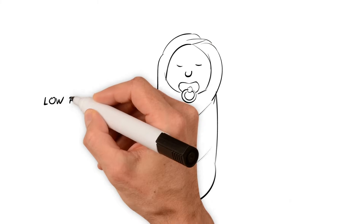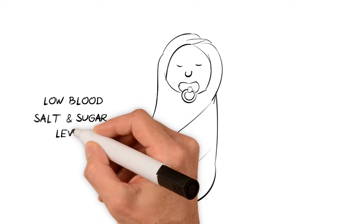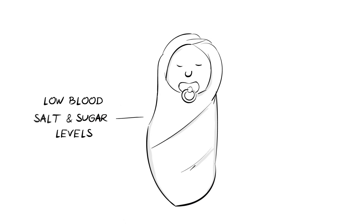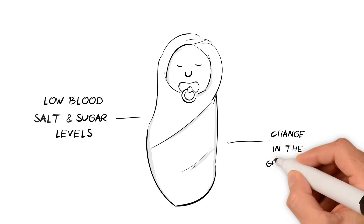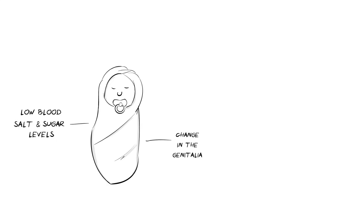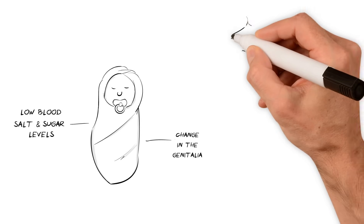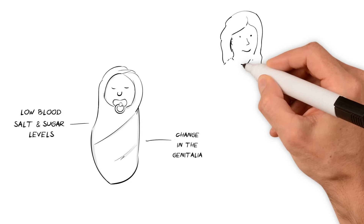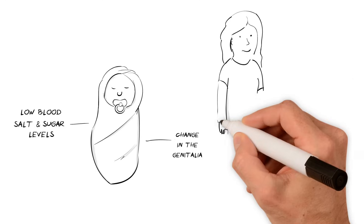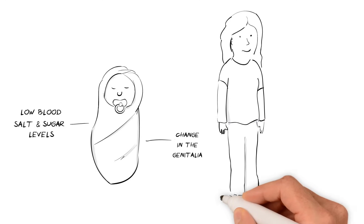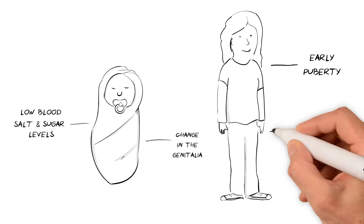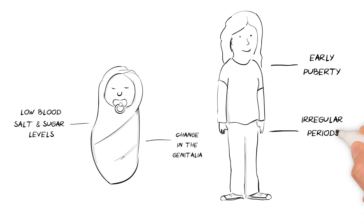In severe cases, newly born babies may be very unwell, with low blood salt and sugar levels, which can be life-threatening if not treated. Female babies may have a change in the genitalia due to the increased sex hormones. In milder cases, symptoms may not appear until later into childhood or early adulthood. Because of the increased sex hormones, boys and girls may go through puberty earlier than usual, and girls may have symptoms such as irregular periods and facial hair. In the mildest forms of CAH, there may be no symptoms at all.